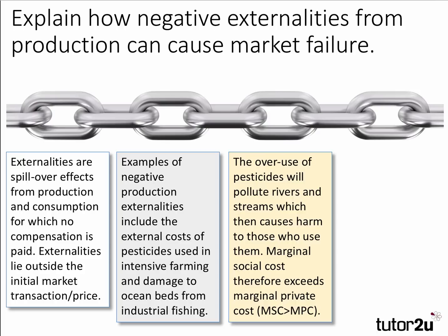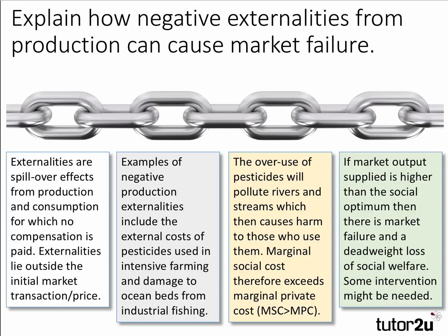Now let's build the chain of reasoning. The overuse of pesticides will pollute rivers and streams, which then causes harm to those who use them. Therefore, marginal social cost will exceed marginal private cost, clearly showing a divergence between private and social cost. If the market output supplied is higher than the social optimum, then there is market failure and a deadweight loss of social welfare.